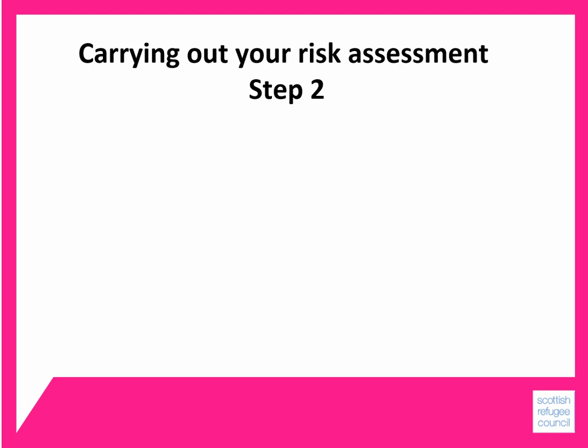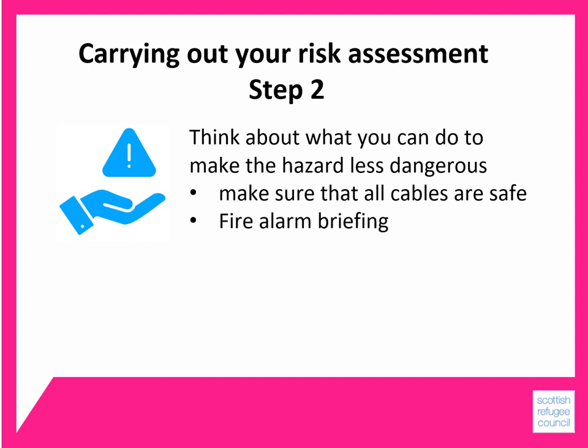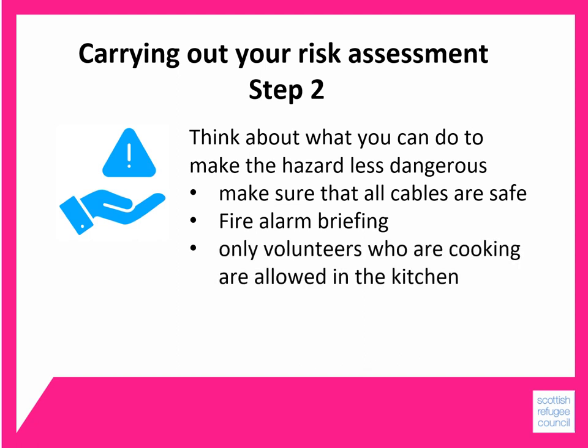Step two of carrying out your risk assessment is to think about what you can do to make the hazard less dangerous. What action can you take? Actions could be making sure that all cables go along the edge of the room if possible, and if not, are taped to the floor. Telling people at the beginning of the event what to do if the fire alarm goes off, and working with the venue to make sure that translated signs are available for fire exits. To prevent scalds and burns, only people who are cooking are allowed in the kitchen. All of these actions need to be written down so that you can monitor them and make sure that they're carried out.